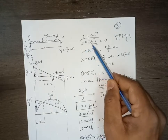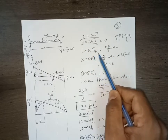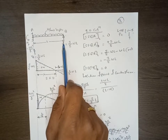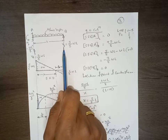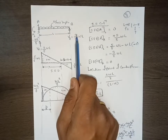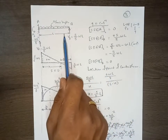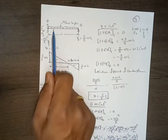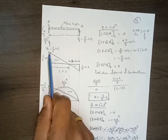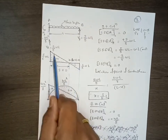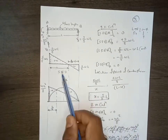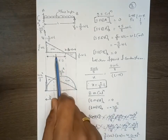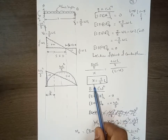On the left-hand side of point A there are no forces, so shear force is zero. Once you cross point A you get the VA reaction, giving a shear force of positive 5wL/8 on the right-hand side of A. On the right-hand side of point B the shear force is zero, and on the left-hand side it is the remaining reaction. Since there is a UDL, the variation of the shear force diagram is linear between these two points, and they are connected accordingly.